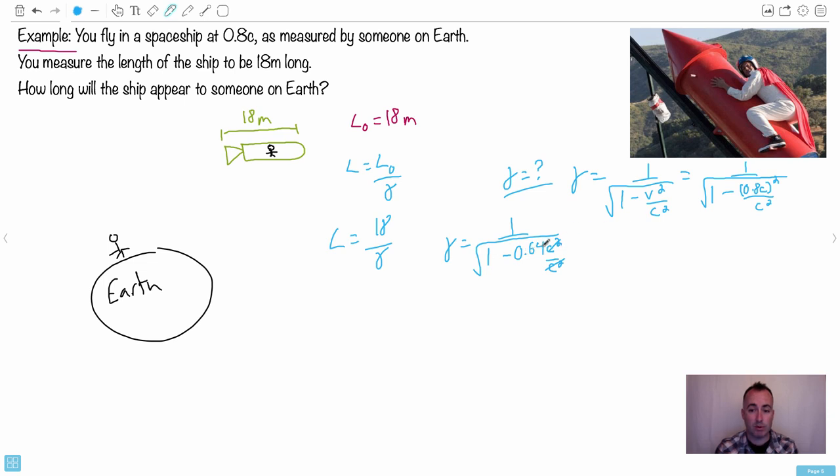Well, the 1 minus 0.64, that's 1 over 0.36, square rooted, of course. So maybe I'll use my calculator for that because I need to know this. So what's the square root of 0.36? Oh, I should have known that. That's 0.6, of course. But what's 1 over that? That I didn't know. So I get that gamma is 1.67 to 2 decimals here.